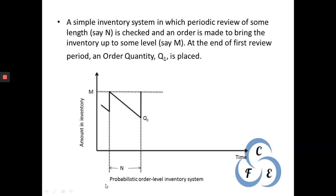Let us discuss this with a diagram for more clarity. On the X-axis we have periodic time, and on the Y-axis we have the amount of inventory. At the start of the first period, we have an inventory of capital M in our house or shop. During the course of this period, some inventory is consumed or sold, so it reduces down to a lower point.